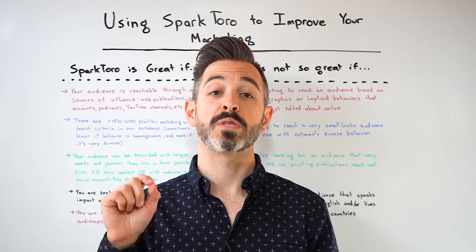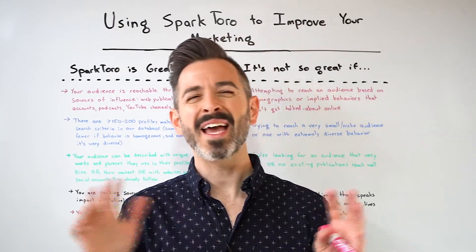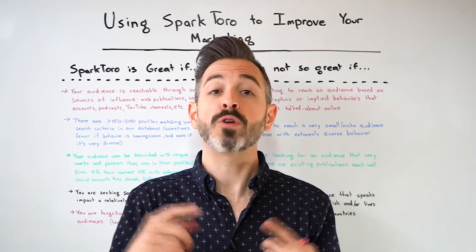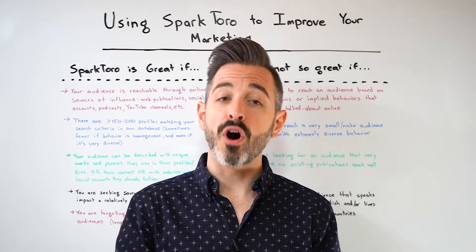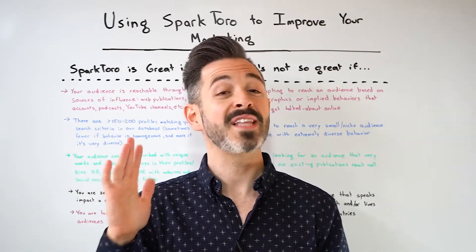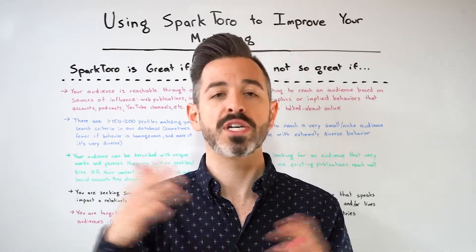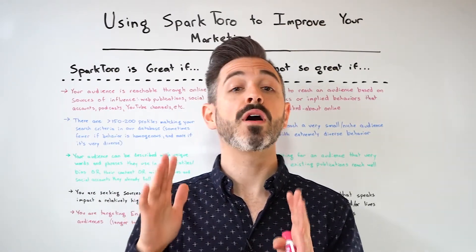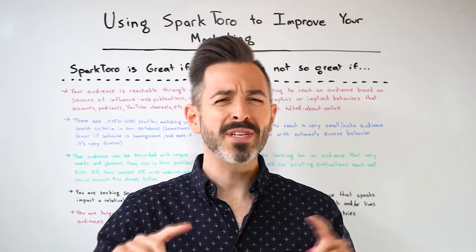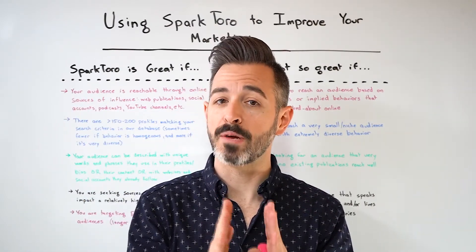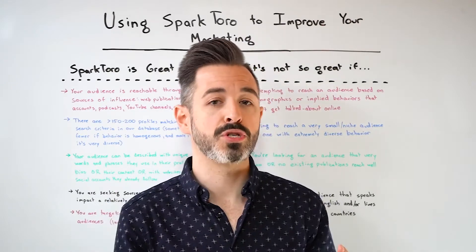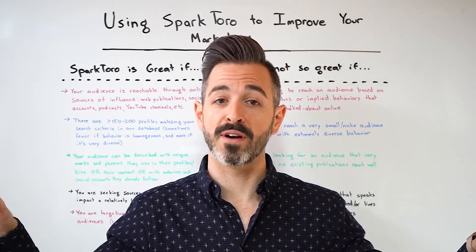Now let's shift gears to talk about what SparkToro is and isn't good at. I kind of hate when products and founders don't openly show their weaknesses, and like every tool, we have some too. SparkToro is an excellent source of data if your audience is reachable through online sources of influence — publications, social accounts, podcasts, YouTube channels, etc. If that's not the case with at least some consistency, SparkToro doesn't work as well. It works really well if there are 150 to 200 or more profiles in our database matching your search criteria. If an audience has fewer but they're very homogeneous in their behavior — meaning they all generally follow, share, and visit similar things — that number goes down. And if the reverse is true and an audience is very diverse in their behavior, that number goes up.